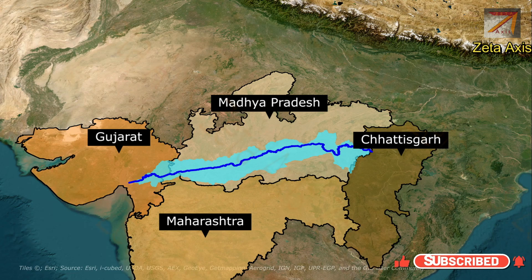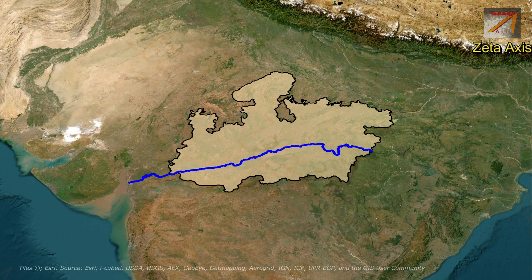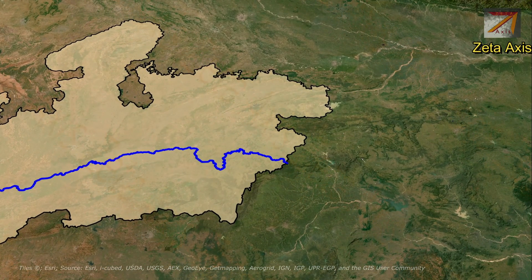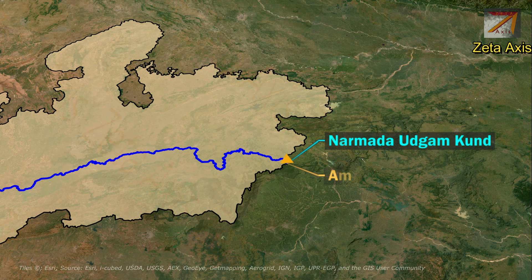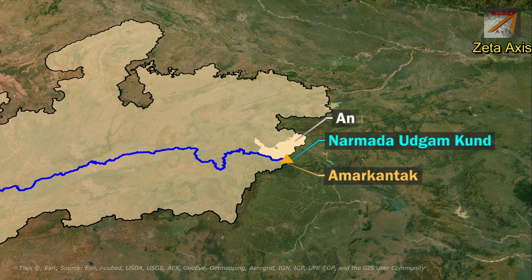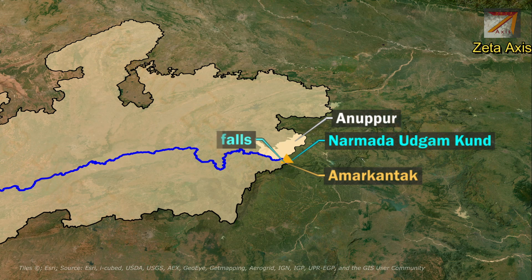Now let's discuss the course of Narmada River. It originates from a small reservoir called Narmada Kund, located at Amarkantak on the Amarkantak Plateau in Anuppur district of Madhya Pradesh. From its origin, the Narmada river rapidly descends from the plateau, forming Kapildhara waterfall near Anuppur and Dindori district.